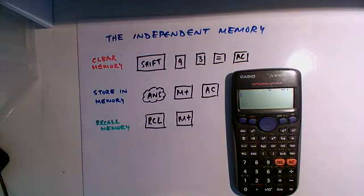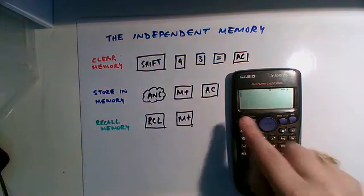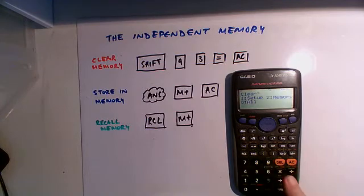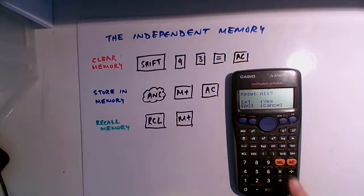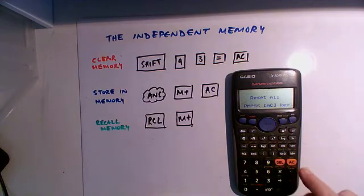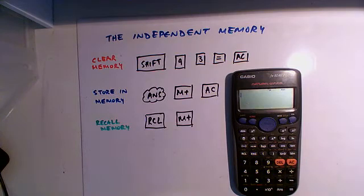So if you think you might want to use the memory function, make sure that you have cleared all the previous memories from your calculator. You do this by pushing shift, 9, then it tells you to push 3 because we want to clear all the memories. Then it tells you to push equals for yes, and then it tells you to press the all clear key.